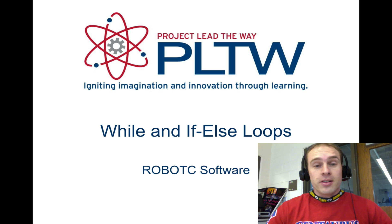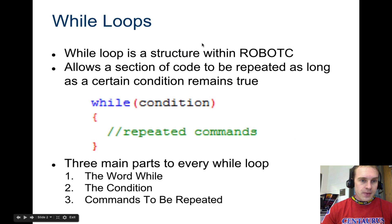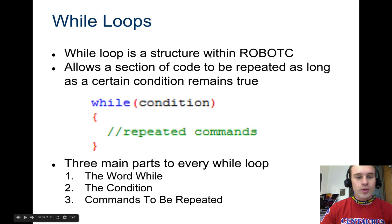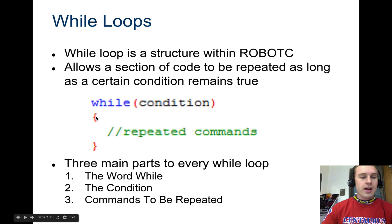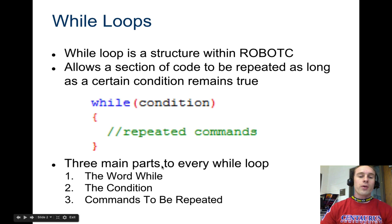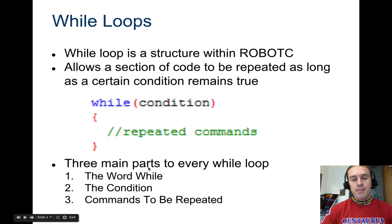We're going to look at while and if-else loops today. If you want to program a while loop, here's how you do it. It's a structure within Robot C that allows code to be repeated. You would type in while, then give some type of condition. Note there is no semicolon — that's an important thing. Then you have curly braces with whatever you want repeated inside, while that condition is met. There are always three parts: the word while, the condition, and the commands.